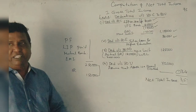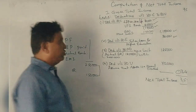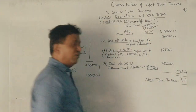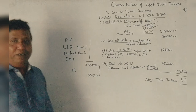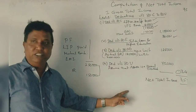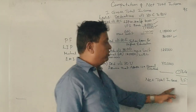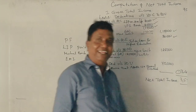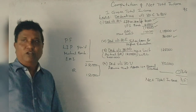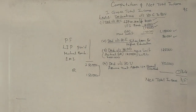So the total deductions from all these sections amount to three lakhs forty-five thousand rupees, and the net total income is three lakhs fifty-five thousand rupees. That's how you solve this question.